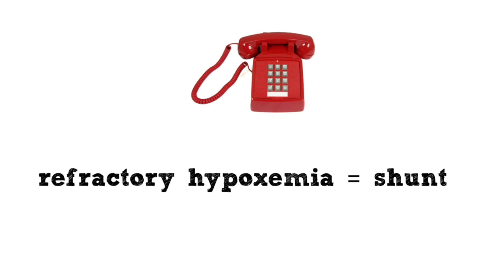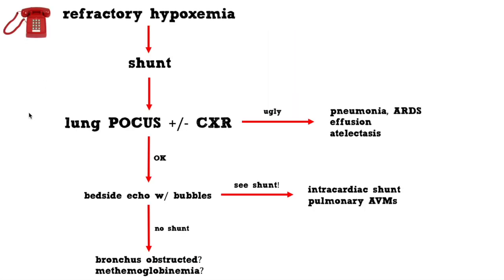When you get called about a patient whose hypoxemia is not responding to oxygen, you can know right then on the phone that that patient has shunt physiology, even before you go to the emergency department. Start with the basics: look at their lungs with ultrasound, perhaps get a chest x-ray, and most of the time you'll find some obvious pulmonary pathology explaining the hypoxemia. But if the lung ultrasound and chest x-ray are normal, you need to consider an intracardiac shunt or vascular shunt, which you can evaluate at the bedside by injecting agitated saline while doing a bedside POCUS.